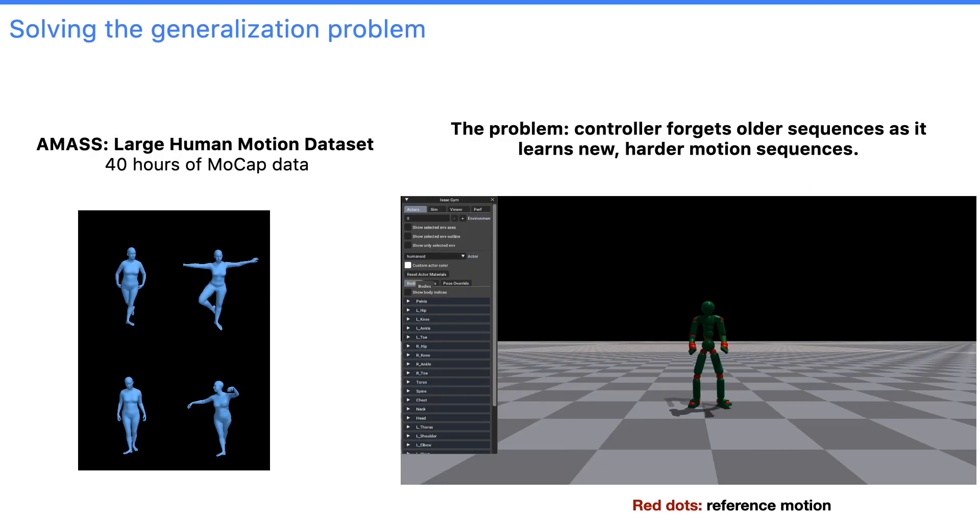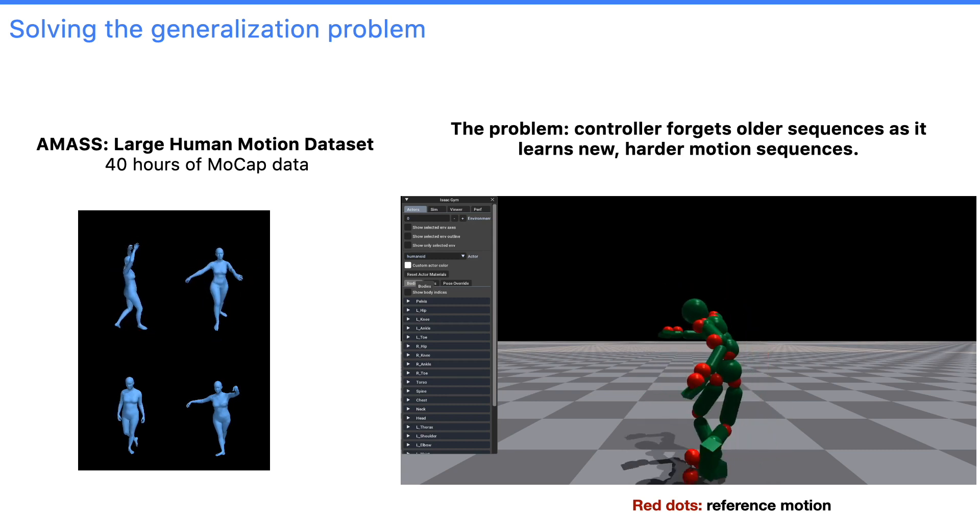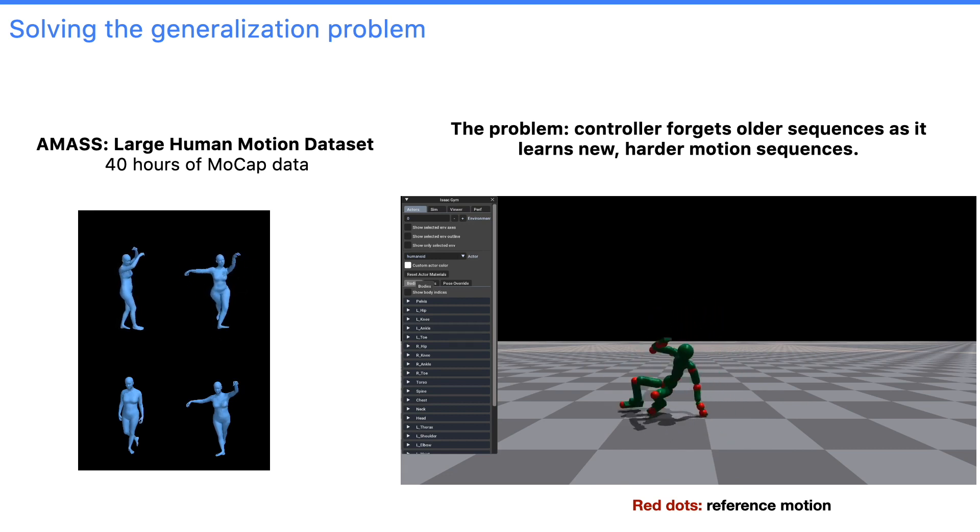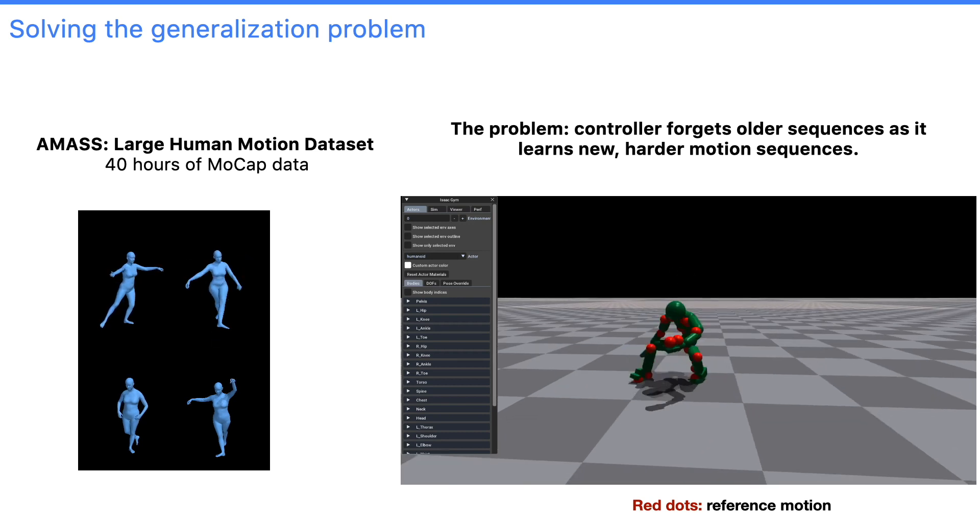The first problem we tackle is generalization, how to learn to imitate almost all possible human motion. First, we'll use the largest human motion dataset in the community, AMAS, which contains about 40 hours of uncurated human motion, ranging from simple movements like walking, running, and jumping, to hard ones like cartwheeling and backflipping.